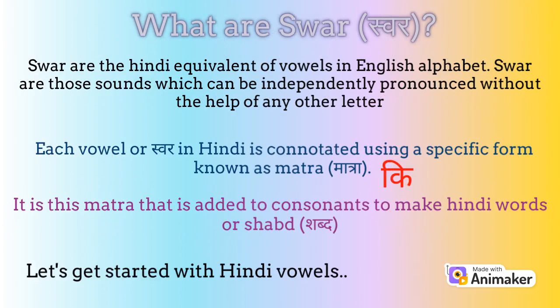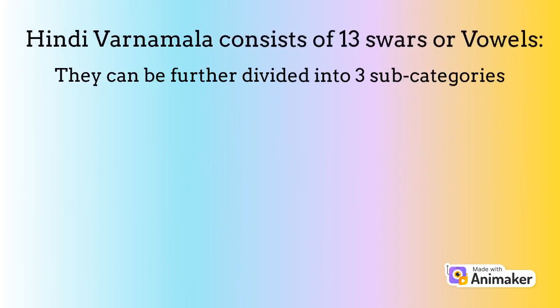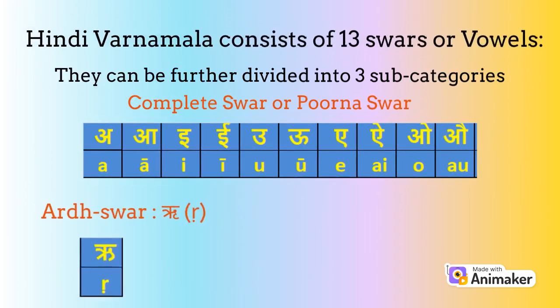Swaras are sounds which can be pronounced independently. In Hindi script, there are 13 Swaras and they are denoted using special symbols when they are used in conjunction with consonants. There are 3 types of Swara: complete Swara, ardha Swara, and anusvaara.